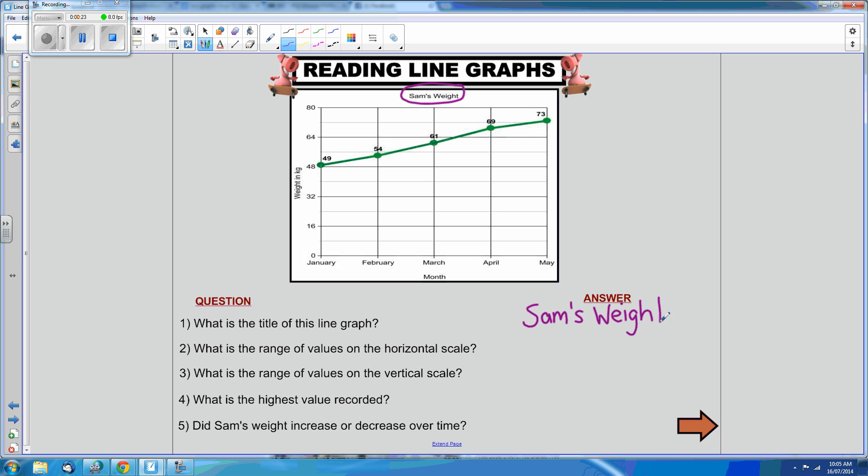Question 2: What is the range of values on the horizontal scale? The horizontal scale can be found on the x-axis. Here we have months: January, February, March, April, and May. So the range is from January to May.